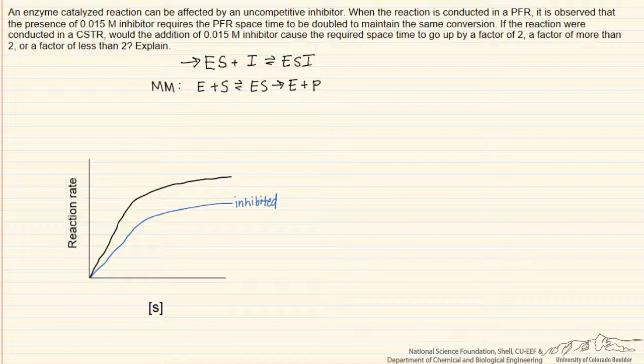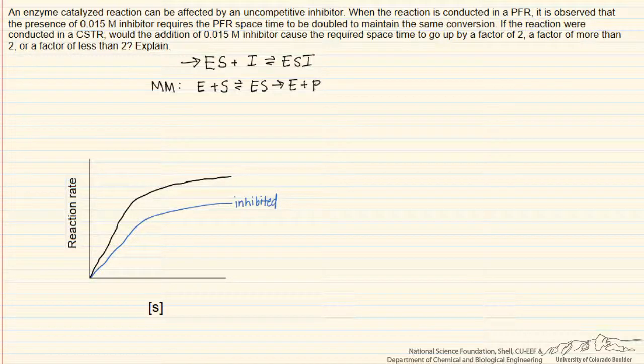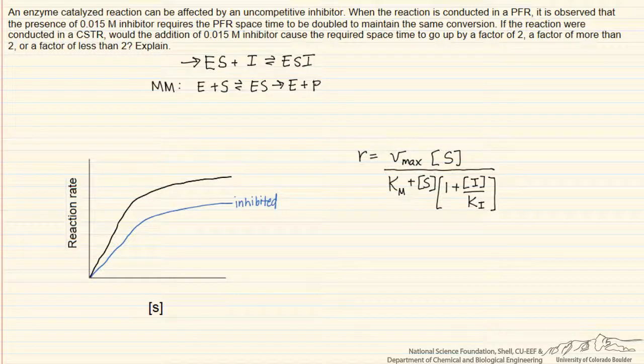We can also see this from the rate expression for an uncompetitively inhibited reaction. Here we have the form of that expression, where we see that as the inhibitor concentration goes up, the magnitude of the denominator goes up, and so our rate goes down.